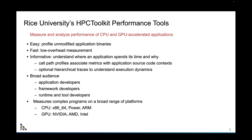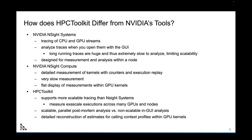Call paths associate metrics with application source code context, and you can also get traces to understand how the execution advances over time. It's designed for a broad audience: application developers, framework developers, and runtime and tool developers. On CPUs it works on x86, Power, and ARM, and on GPUs it works on NVIDIA, AMD, and Intel GPUs.